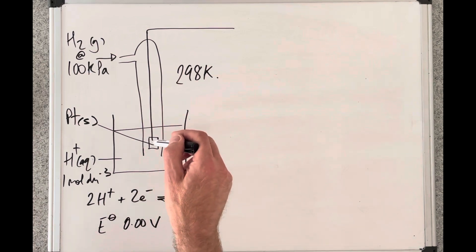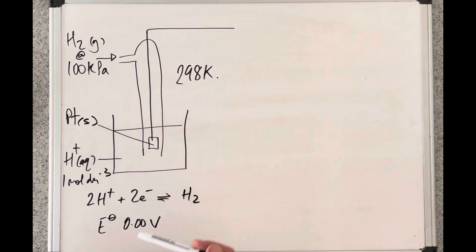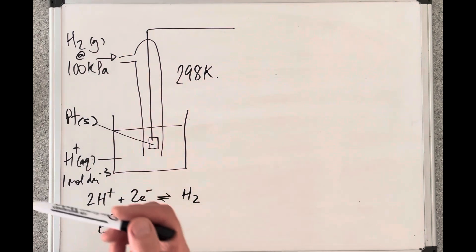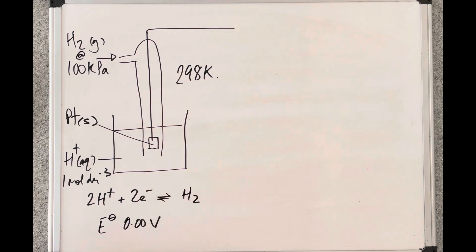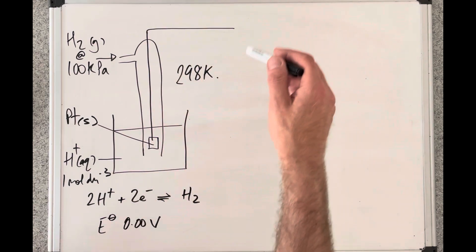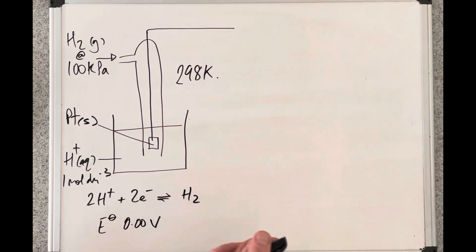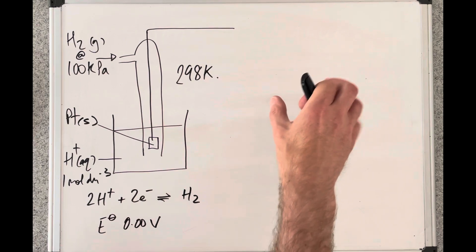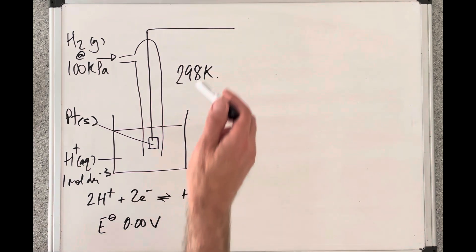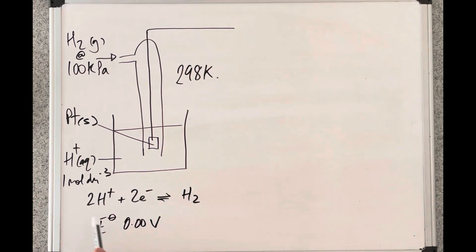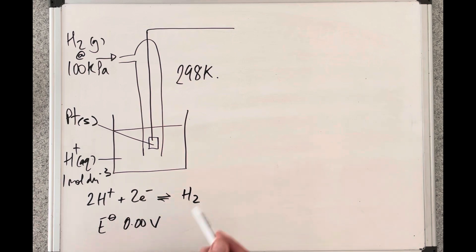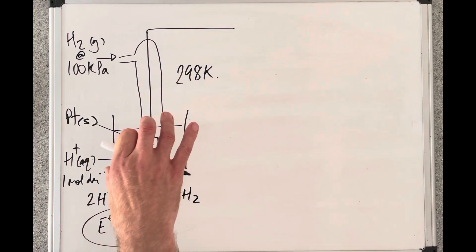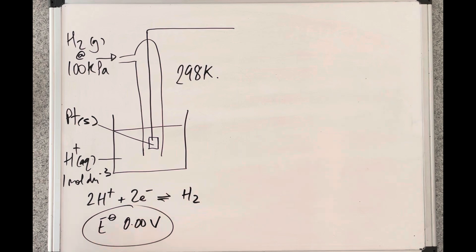We need an electrode — that's going to be made from platinum, since we've already got our two oxidation states for hydrogen. There's a wire going to a voltmeter, and the half cell whose standard electrode potential you're measuring goes on the other side. The temperature is 298 Kelvin. The reduction equation for this half cell shows two H+ ions gaining two electrons to become hydrogen. Importantly, this electrode is assigned an electrode potential value of 0 volts.